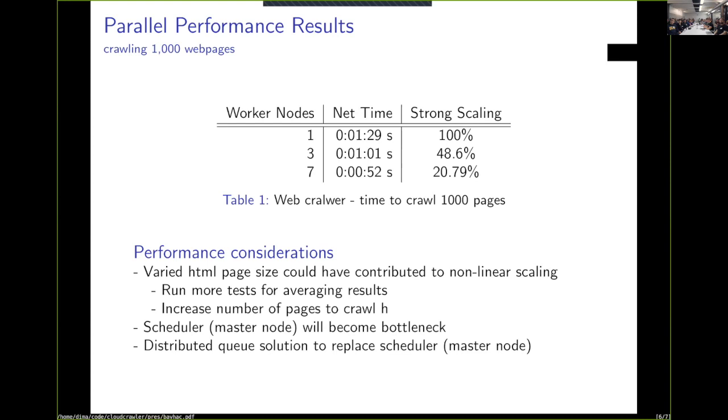to get HTML for a thousand pages and then parse that HTML with one worker node, it took a minute and 30 seconds. When I made them three worker nodes, it basically dropped down to one minute. So essentially there was almost a 50% improvement. Basically, the time to reach your goal dropped down by about 30 seconds.